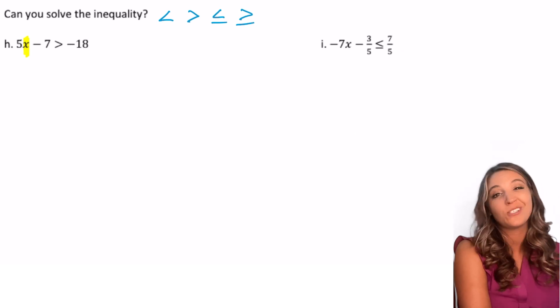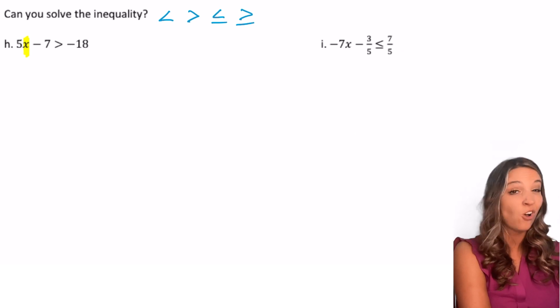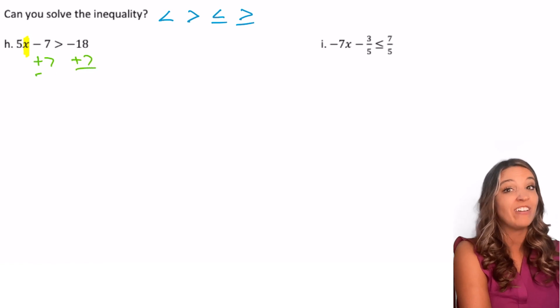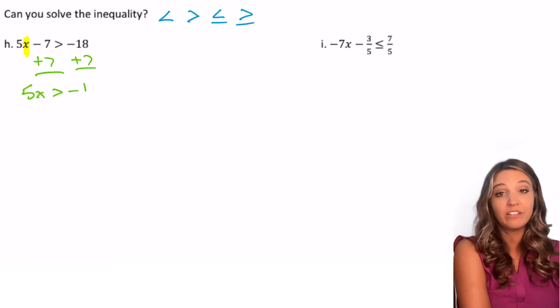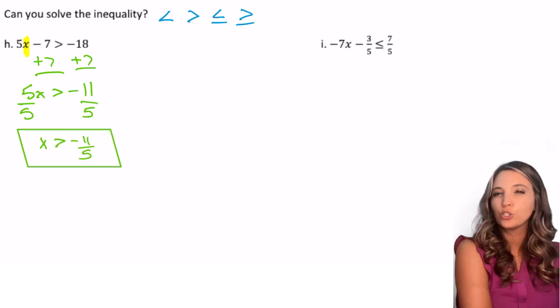We solve inequalities just like we solve equations. So if I'm solving for x, I'm going to add that 7 first to both sides, get 5x is greater than negative 11 and divide by 5. X is greater than negative 11 fifths. Try the next one.